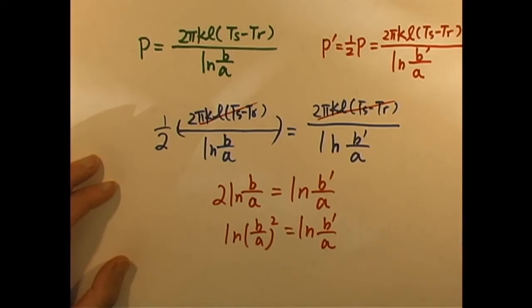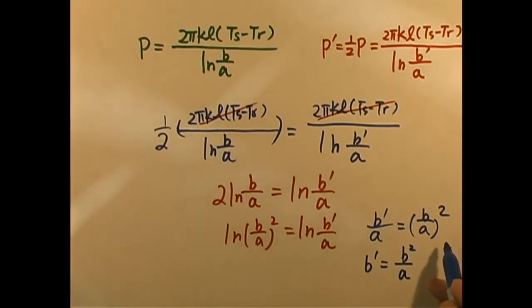This gives us ln(B/A) equals ln(B'/A) squared. So the new B equals the old B squared over A. And we can fill in the number.